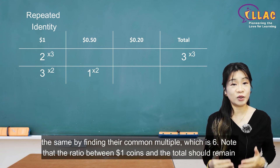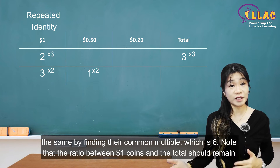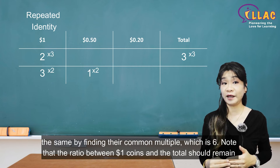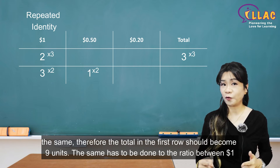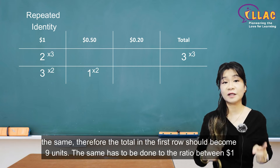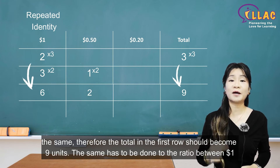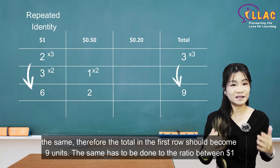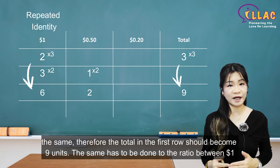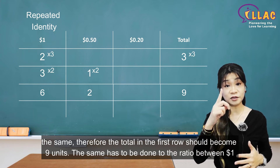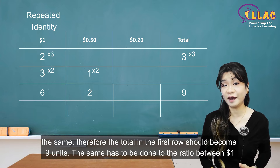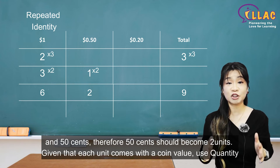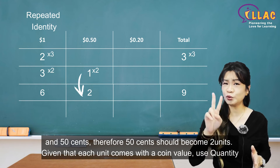Note that the ratio between $1 coins and the total should remain the same. Therefore, the total in the first row should become 9 units. The same has to be done for the ratio between $1 and $0.50 coins. Therefore, $0.50 cents should become 2 units.